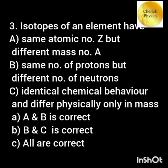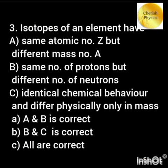Isotopes of an element have Option A: same atomic number but different mass number. Option B: same number of protons but different number of neutrons.